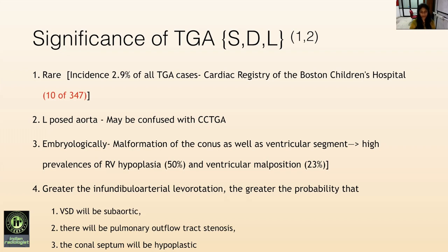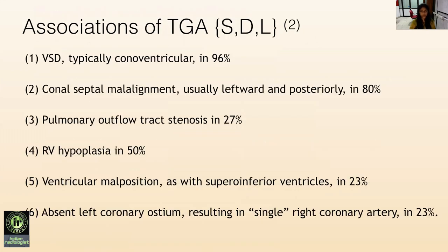There will be pulmonary outflow tract stenosis and the conal septum will be hypoplastic. The associations of TGA with L-malposition aorta were beautifully described by Kuyal et al. in 1995, where they described that VSD is typically present in 96% of cases and is conoventricular in location. Conal septal malalignment is seen in 80% of patients, with pulmonary outflow tract stenosis in 27% of patients. Half the cases were noted to have RV hypoplasia, ventricular malposition in 23%, and absent left pulmonary ostium resulting in single right pulmonary artery.